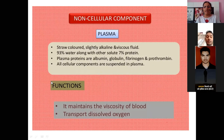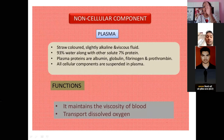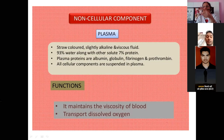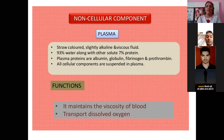Plasma functions to maintain the viscosity of the blood and transport dissolved oxygen. If you take a test tube with venous blood and allow it to stand for some time, clotting occurs and plasma separates. If an anticoagulant is added, plasma is preserved separately. Plasma contains proteins that help with the body's wear and tear and healing processes. Proteins in plasma include albumin, globulin, fibrinogen, and prothrombin.